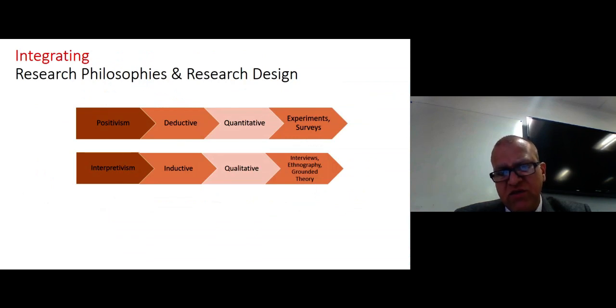Do remember that all things in the research onion are very integrated. So if it's a positivism point of view philosophy, the research is definitely most likely to be deductive. And then if it's deductive and positivism, it'll be quantitative. And if it's quantitative, deductive, and positivism, then it will be experiment and survey method of data collection. On the other hand, if your philosophy is interpretivism, your logic or approach will be inductive, your method will be qualitative, and the methods of data collections will be interviews, ethnographic, grounded theory.